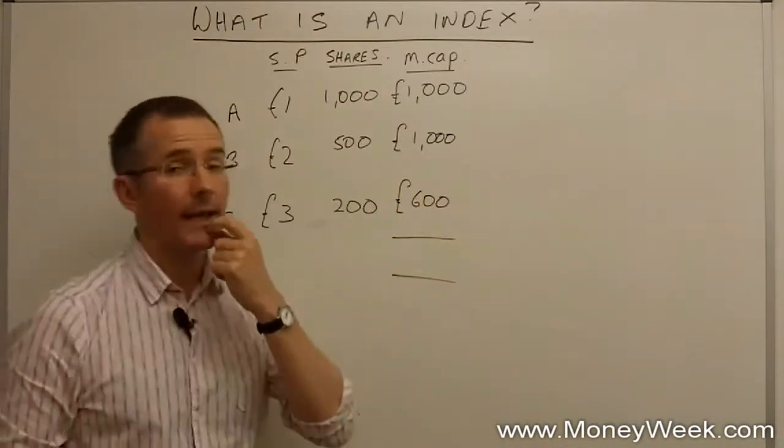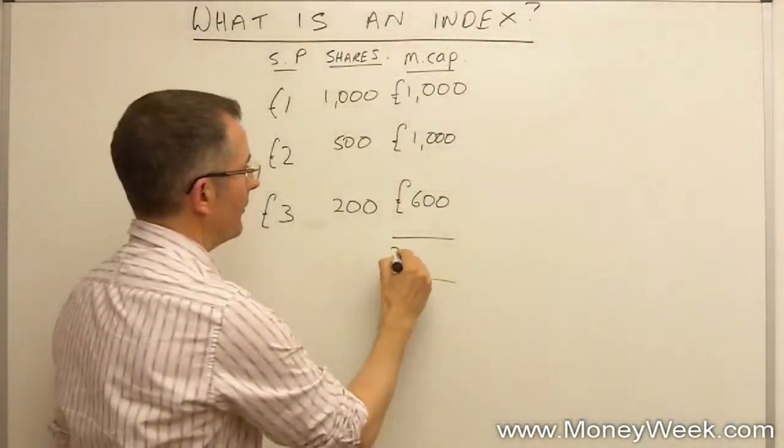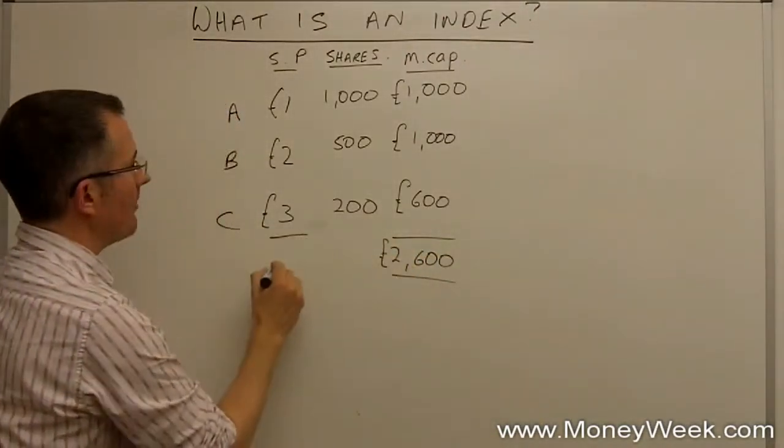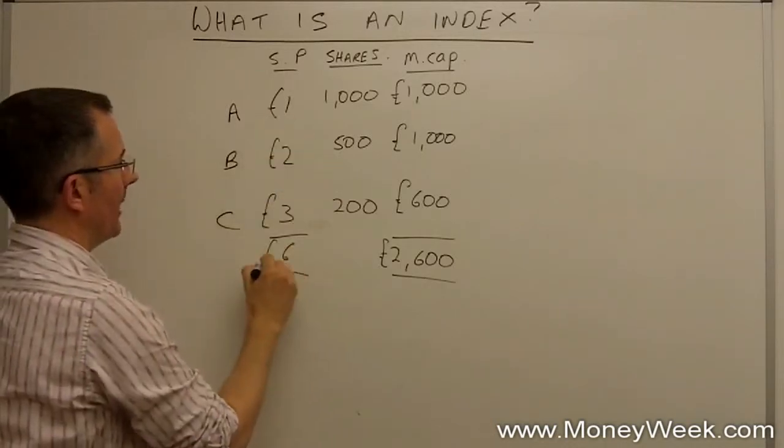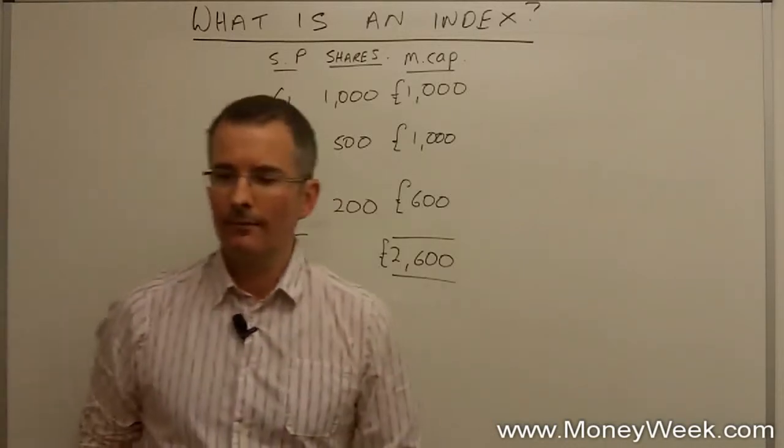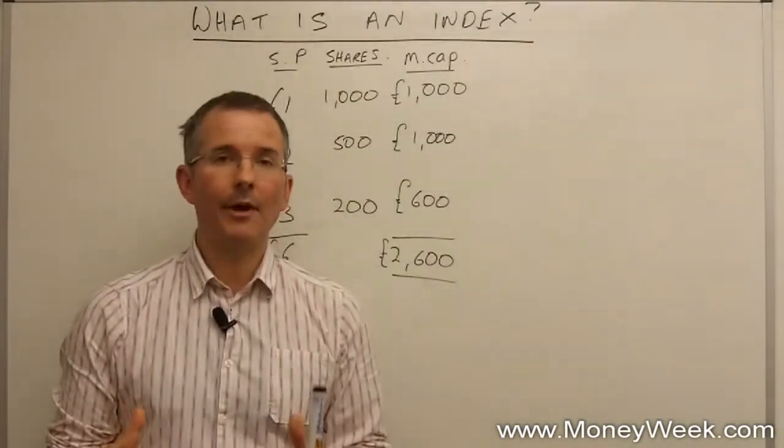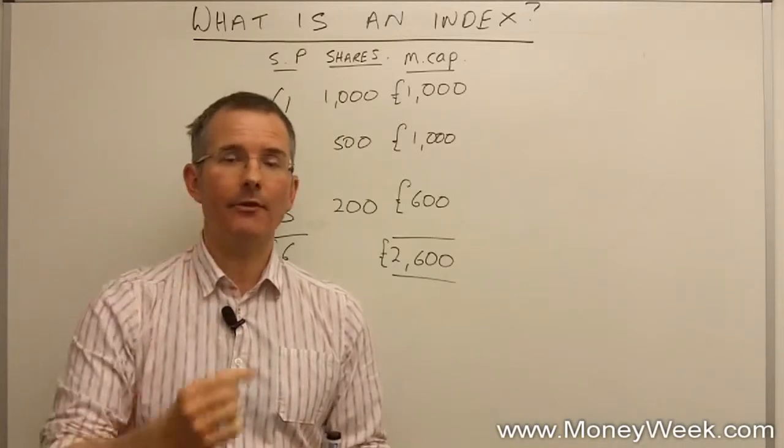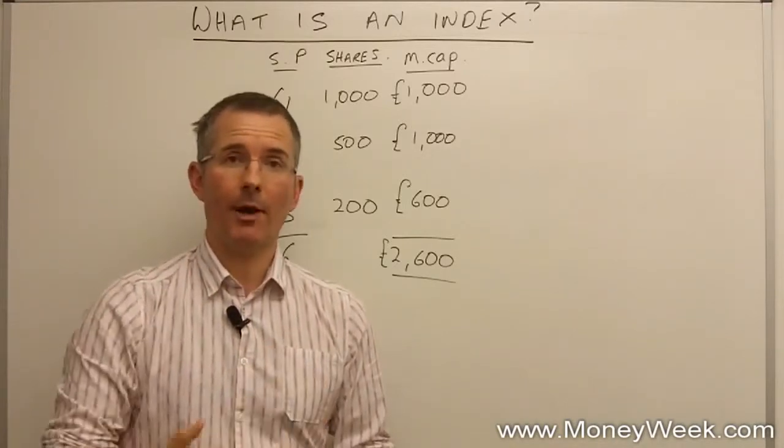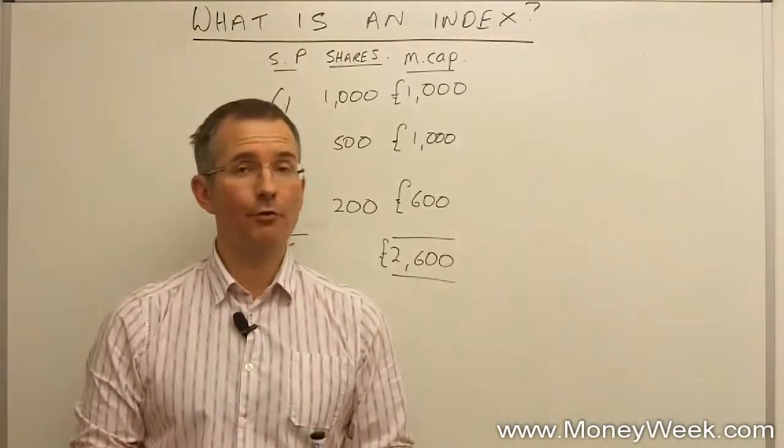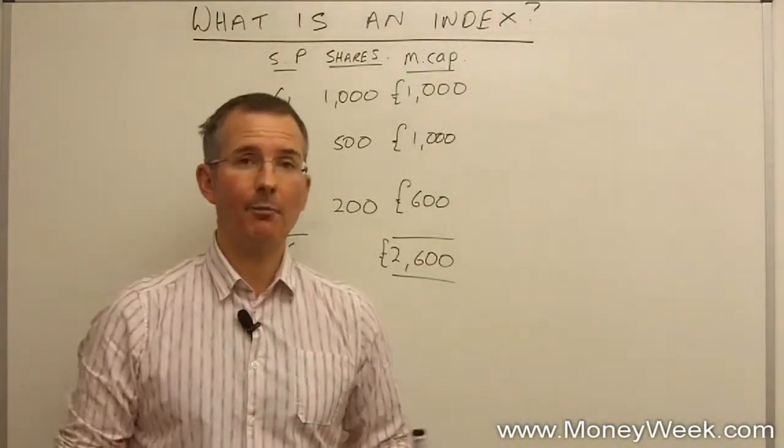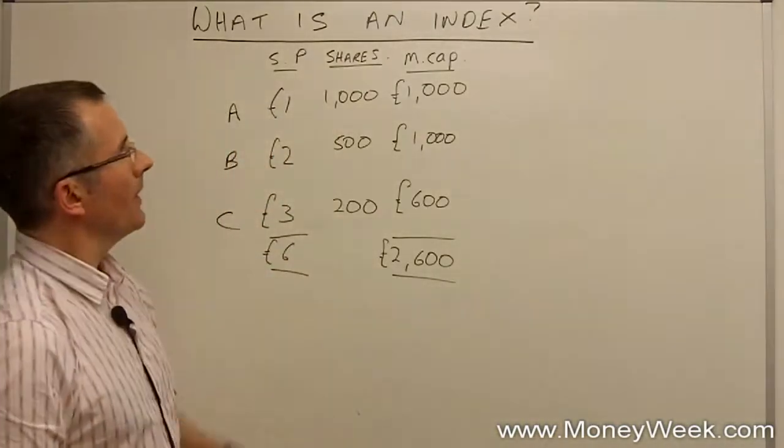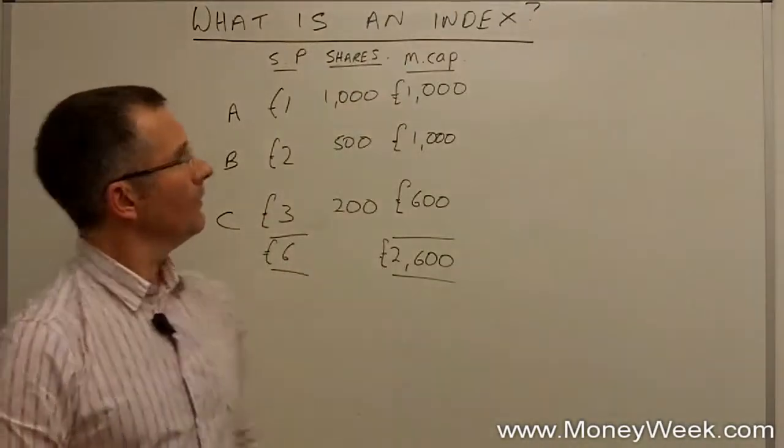So the total market capitalization of these three companies at the moment is 2,600 pounds. The total share prices is six pounds. What we're aiming to put together is an index that captures the performance of these three companies in one number. That's what indices do. Imagine if you're doing 100 or 500 - the snapshot becomes more useful.